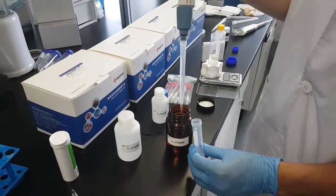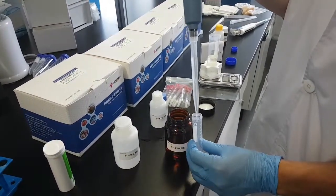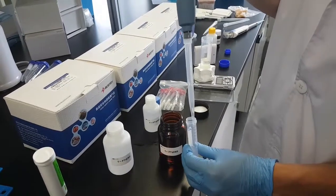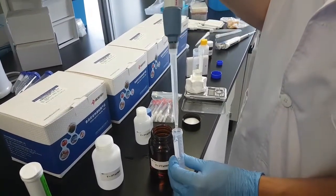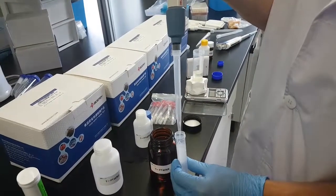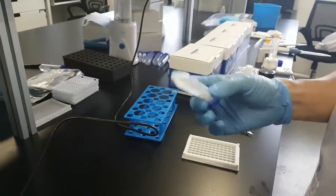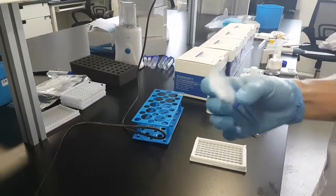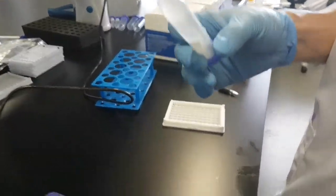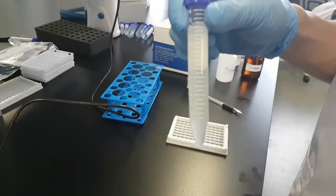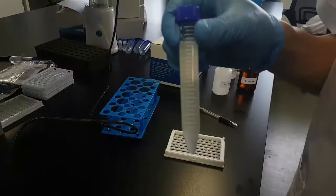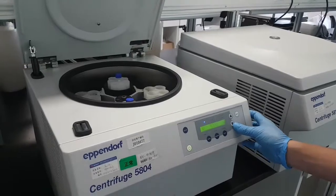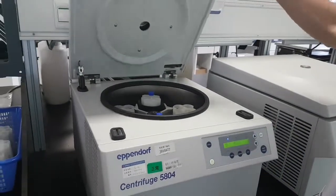Now we will take 10 milliliters of reagent E and put it into the same centrifuge tube. Mix up and down for four to five times and as we can see again, I would like to remark we see only the supernatant. Centrifuge for one minute at 4,000 rpm.